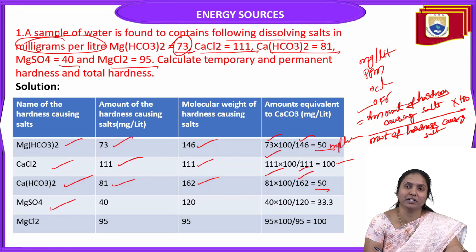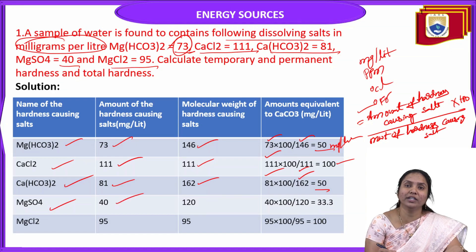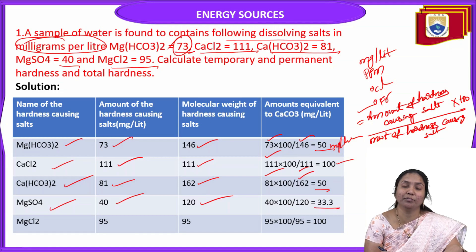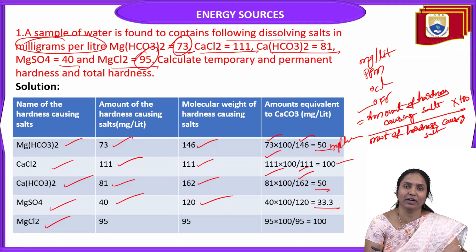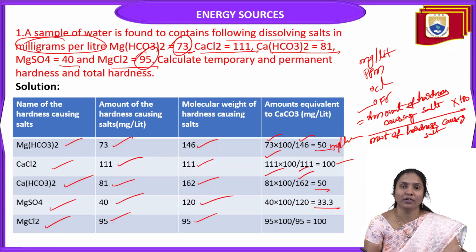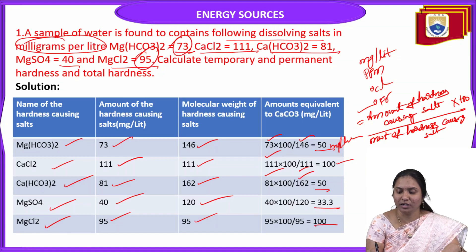For magnesium sulphate: (40/120) × 100 = 33.3 mg/L. For magnesium chloride: (95/95) × 100 = 100 mg/L. All hardness-causing salts have now been converted into CaCO3 equivalent terms.